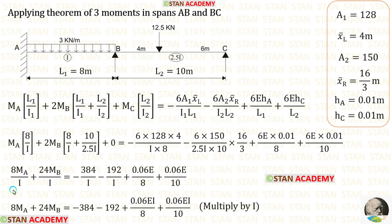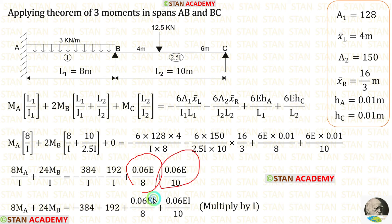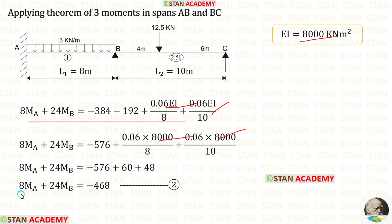After simplification, we apply the values: L1 = 8, L2 = 10, I1 = I, I2 = 2.5I, along with area 1, x̄ left, area 2, x̄ right, HA, and HC. We multiply by I on both sides, eliminating I in several terms, and apply EI = 8000. After calculations, we are making the second equation.